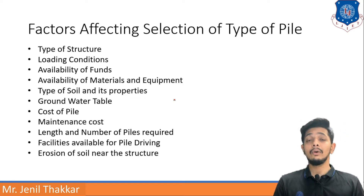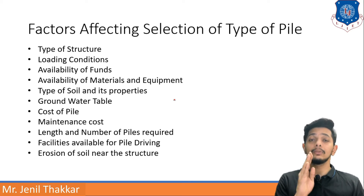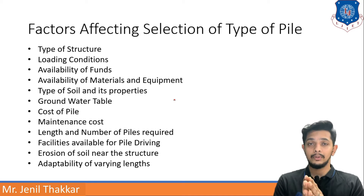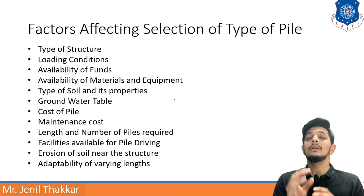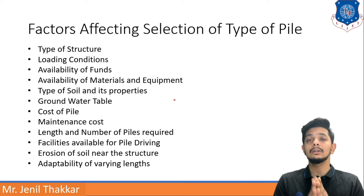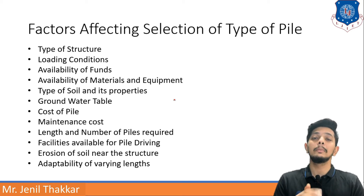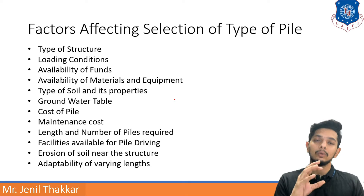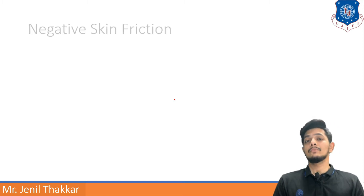Erosion of soil near the structure is another factor — if a canal or river bed runs beside your foundation, you should choose the pile type accordingly. For example, if the soil is loose, you have to go with an end bearing pile. Finally, adaptability of varying lengths is important — if varying pile lengths are possible based on your soil and boring data, it will be more economical because even one meter difference in pile length impacts cost.